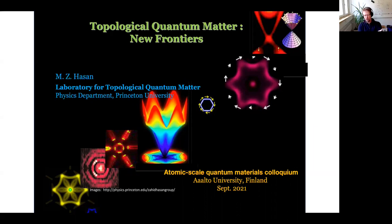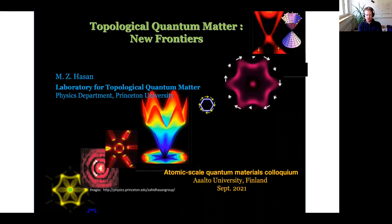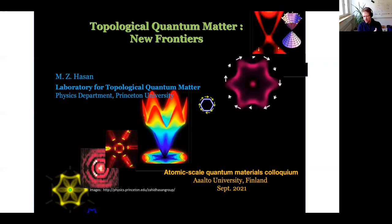His group has also led the way in search for many other topological systems, including topological semimetals, and they have made numerous important contributions to topics such as topological magnets, topological superconductors, and kagome materials. They typically use normal or spin-resolved angle-resolved photoelectron spectroscopy, and also STM and scanning tunneling spectroscopy to study these topological phases of matter. The title of today's talk is 'Topological Quantum Matter and the New Frontiers.' Please, the floor is yours.